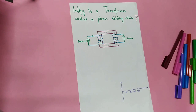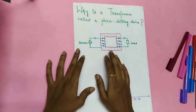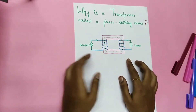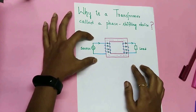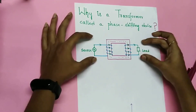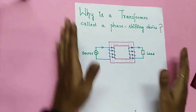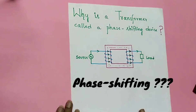Hello everyone, welcome to my YouTube channel. In this video we are going to discuss why a transformer is called a phase shifting device. Let us start with the basic transformer — it has two windings: the primary, which is the side to which the source is connected, and the secondary, which is the winding to which the load is connected.